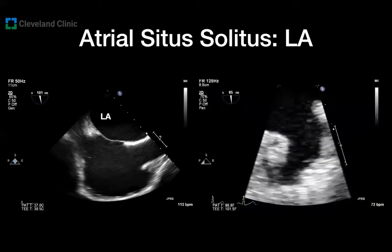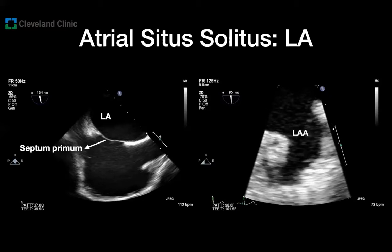Now let's move to the left atrium. The image on the left shows the atrial septum from the bicaval view. The septum primum embryologically belongs to the left atrium and is a left-sided structure. The image on the right shows that the normal morphology of the left atrial appendage should be elongated and finger-like with a very narrow base — very different from the right atrial appendage.